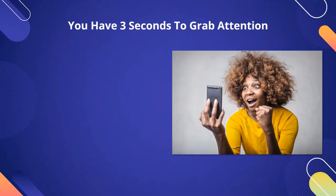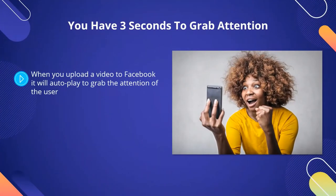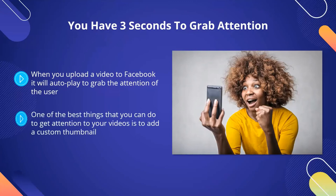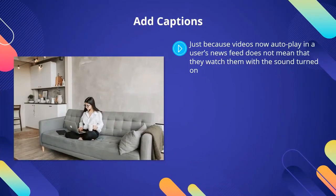You have three seconds to grab attention. When you upload a video to Facebook, it will autoplay to grab the attention of the user. This means that the first few seconds of your videos have to really grab the attention of Facebook users even without the sound on. One of the best things that you can do to get attention to your videos is to add a custom thumbnail. Go and create an eye-catching thumbnail using a free graphic design program like Canva.com, and then upload it during the Facebook native uploading process. Make the first few seconds of your video really count. Add captions. Just because videos now autoplay in a user's news feed does not mean that they will watch them with the sound turned on. It is easy for a Facebook user to disable sound with autoplay videos, and a lot do this, especially with mobile devices.